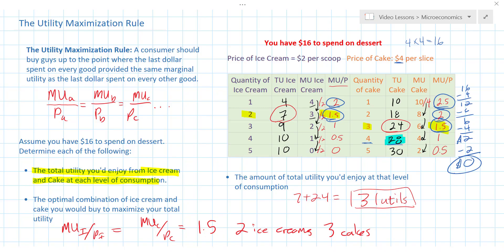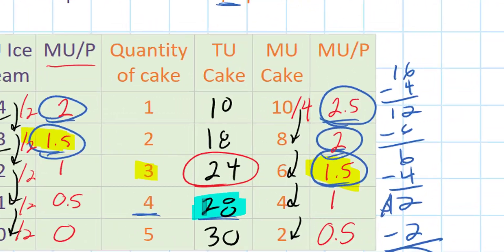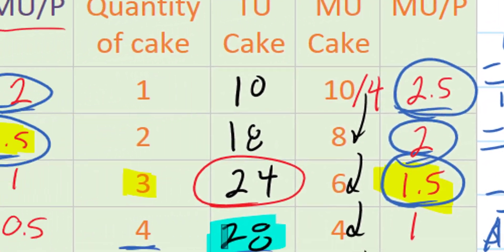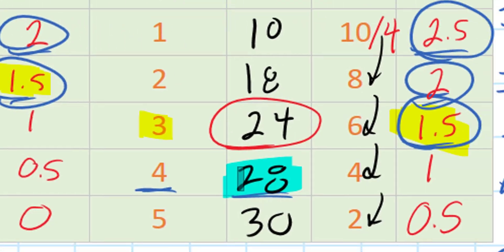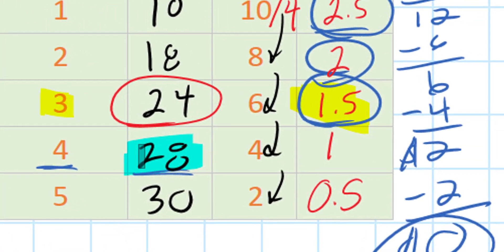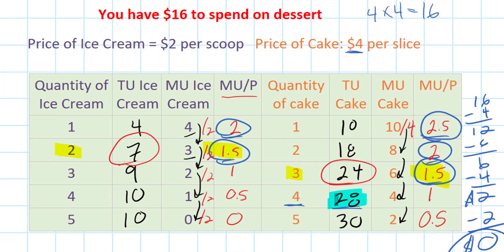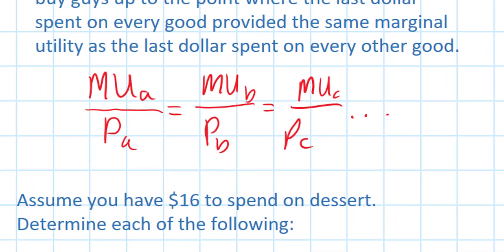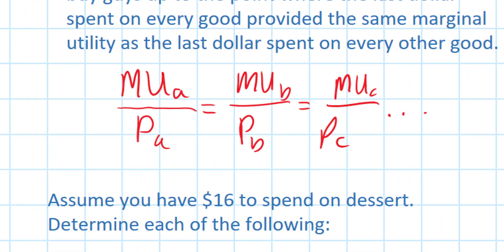That's how I solved this problem — at every level of consumption, I determined what good would provide me with more happiness per dollar, not just total happiness but happiness per dollar. By equalizing the marginal utilities per dollar spent on every good I have to choose from, I am going to achieve what I sometimes like to call consumer nirvana.